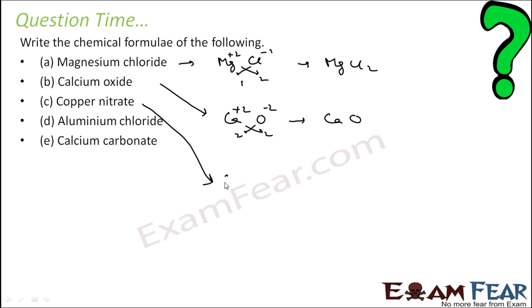The next is copper nitrite. Copper is a metal, NO3 is a non-metal, plus 2 charge, minus 1 charge. Polyatomic ions, I have put in braces. This becomes 1, this becomes 2. This becomes Cu(NO3)2.